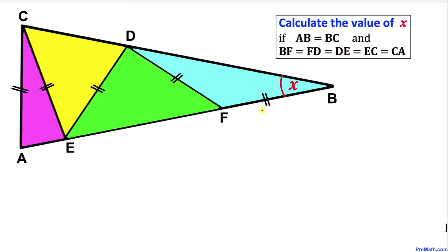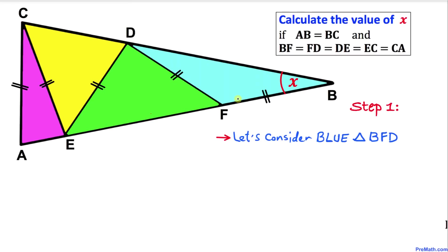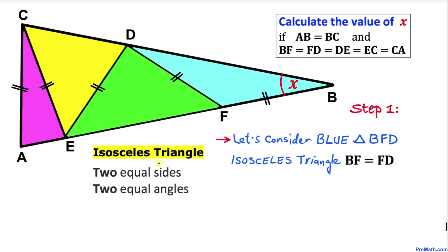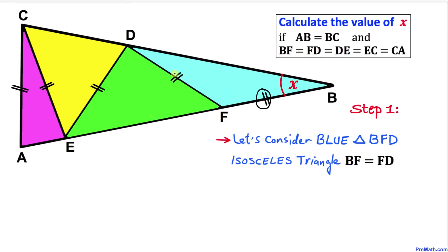Let's go ahead and get started with our solution. First, let's consider the blue triangle BFD. This is an isosceles triangle — a triangle with two equal sides or two equal angles. Since these two sides are equal in length, that means this angle X is going to be the same as this angle X on this side.